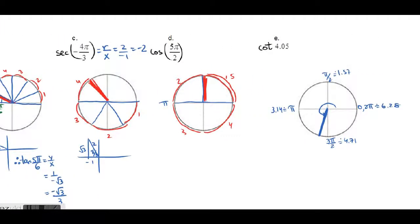For cos(5π/2): cosine is defined as x/r. The radius of a unit circle is 1, and the point here is (0, 1), so x = 0 and r = 1. The answer is 0.